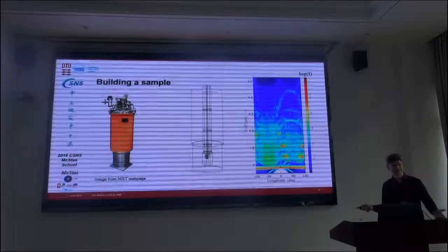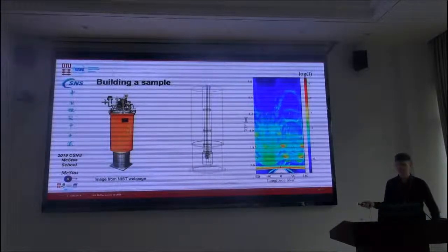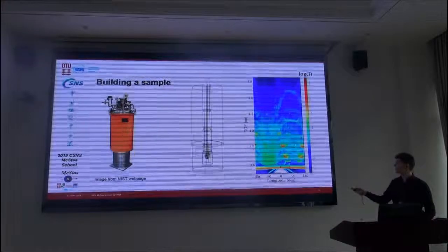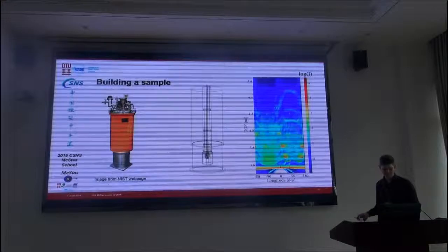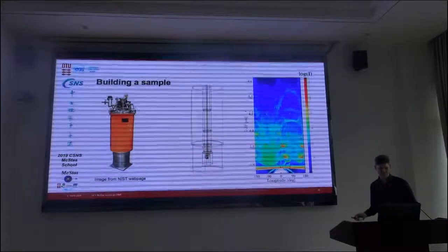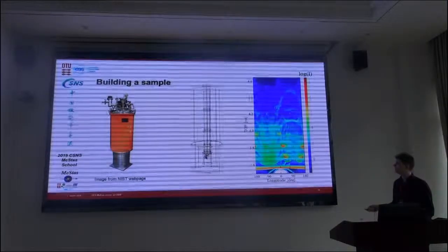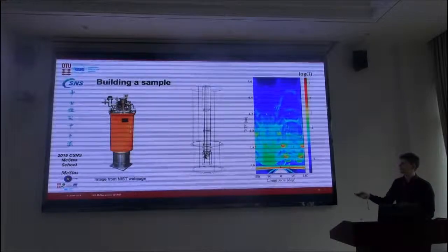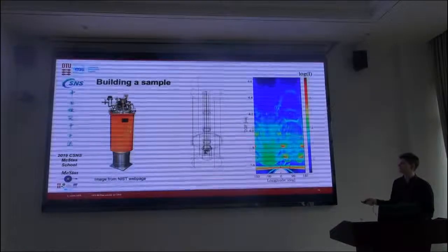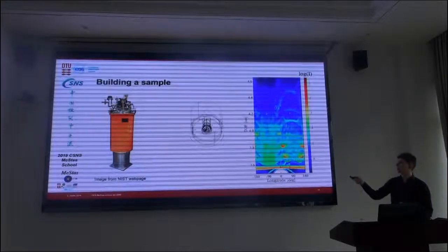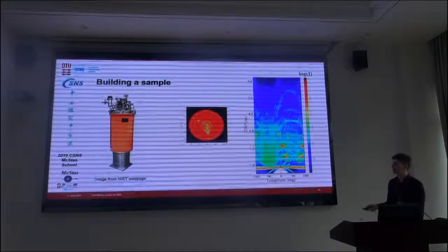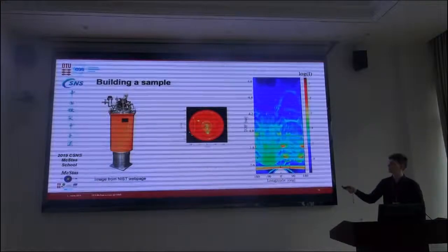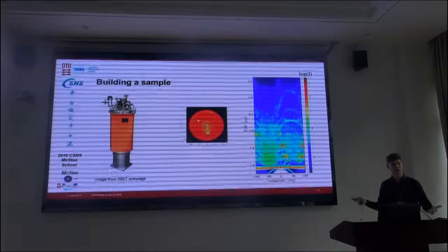But the next step, and also the next step of the exercise, is to understand how it gets so ugly. How we can get all these variants. And so, we need to understand where the neutrons are scattered. And if we look at our cryostat from the top, we can add a logger component, and then look at the scattering position in the cryostat.